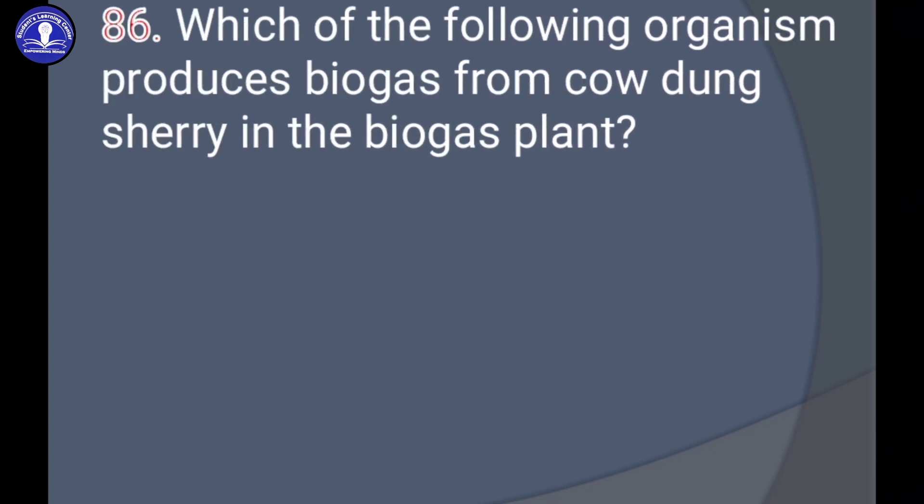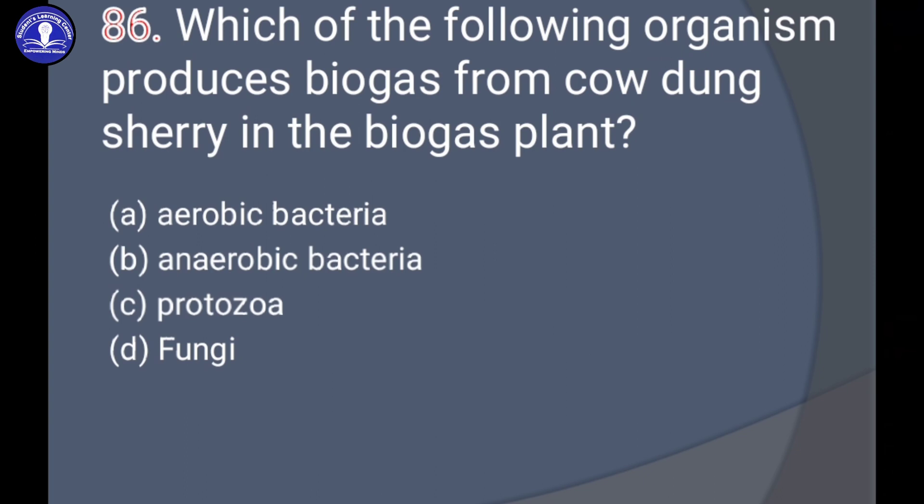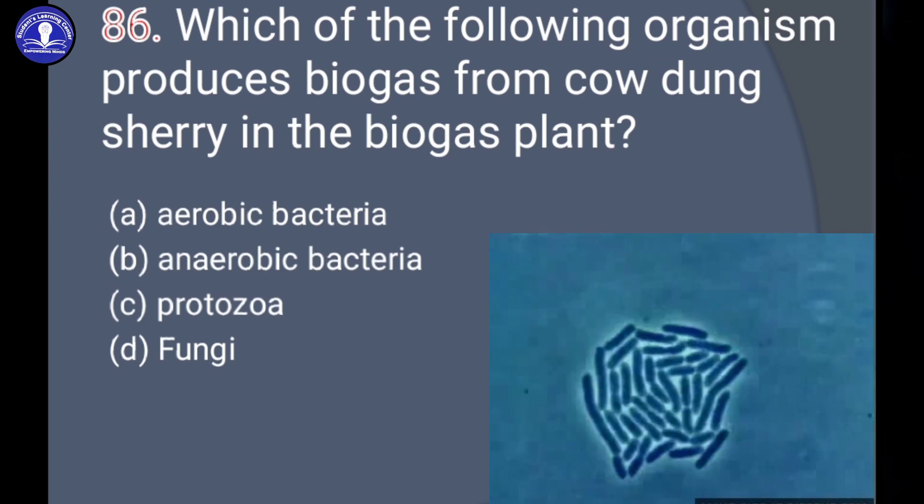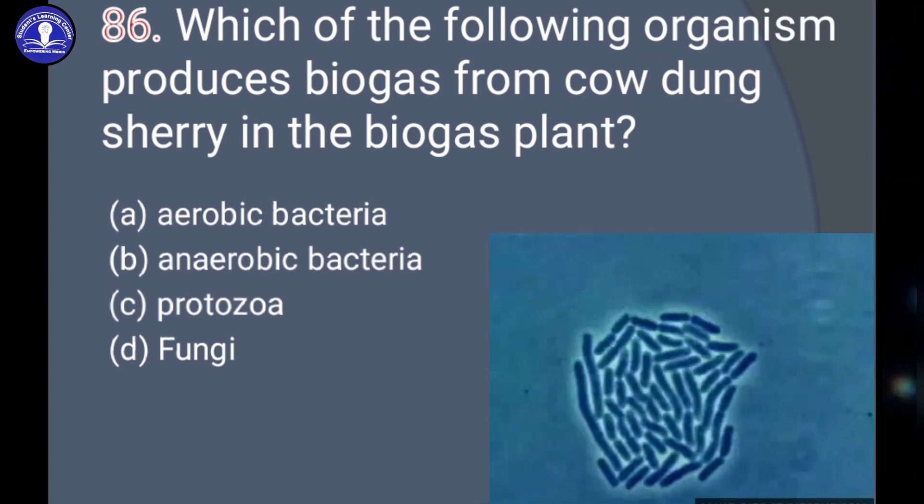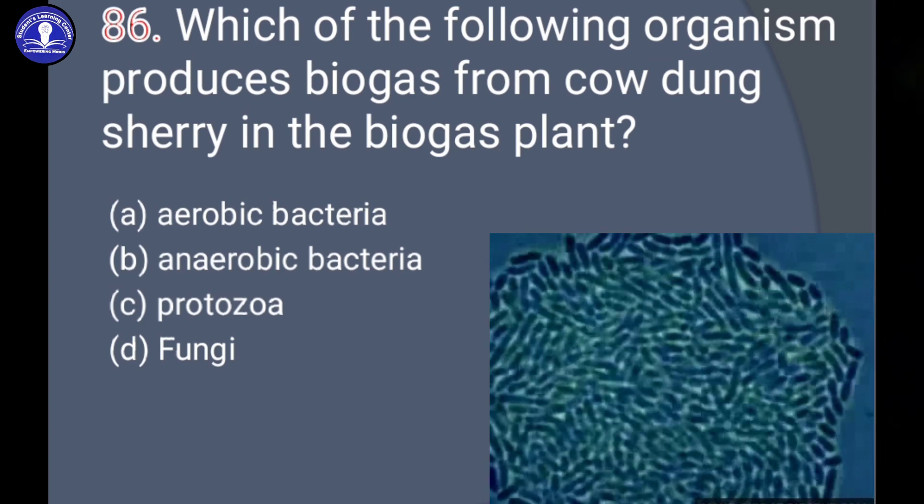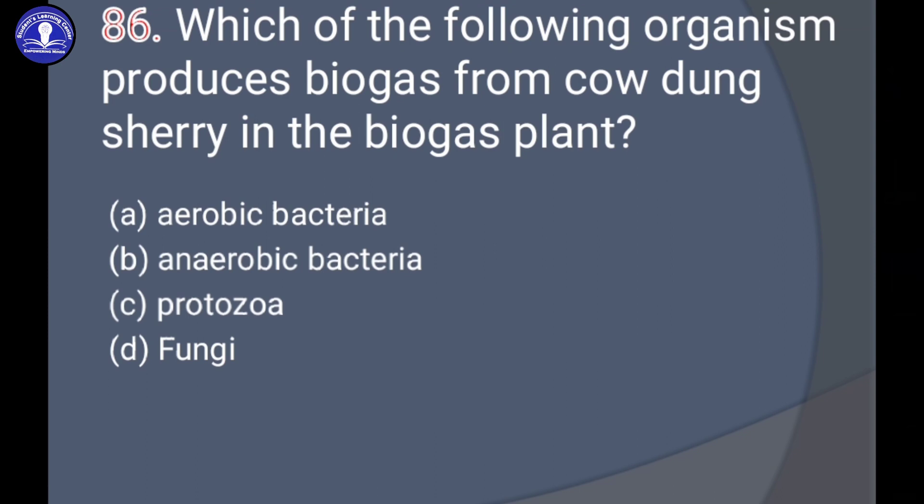Next question: Which of the following organism produces biogas from cow dung slurry in a biogas plant? The options are aerobic bacteria, anaerobic bacteria, protozoa, or fungi. The aerobic bacteria are the bacteria that can grow and live in the presence of oxygen. So the answer would be anaerobic bacteria.